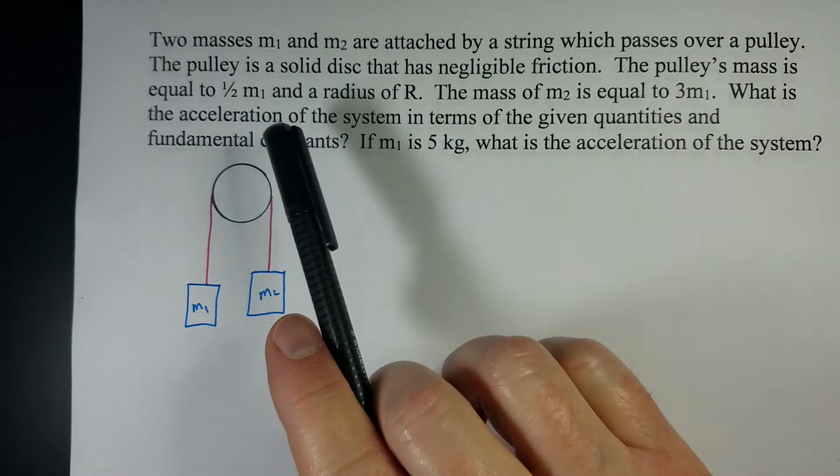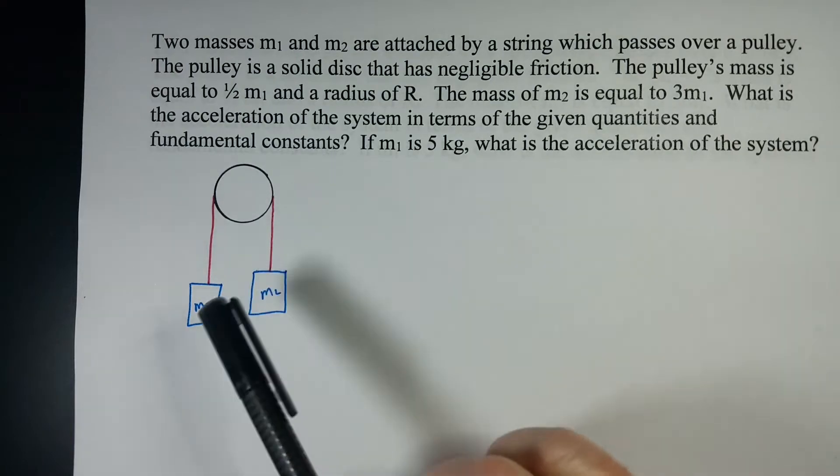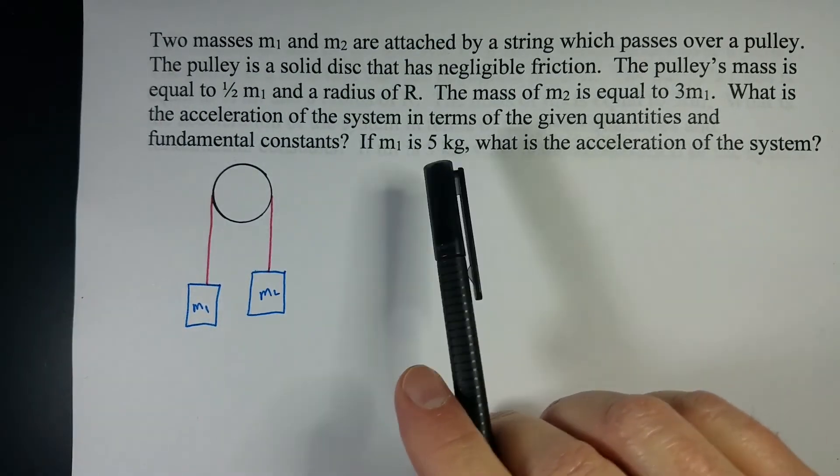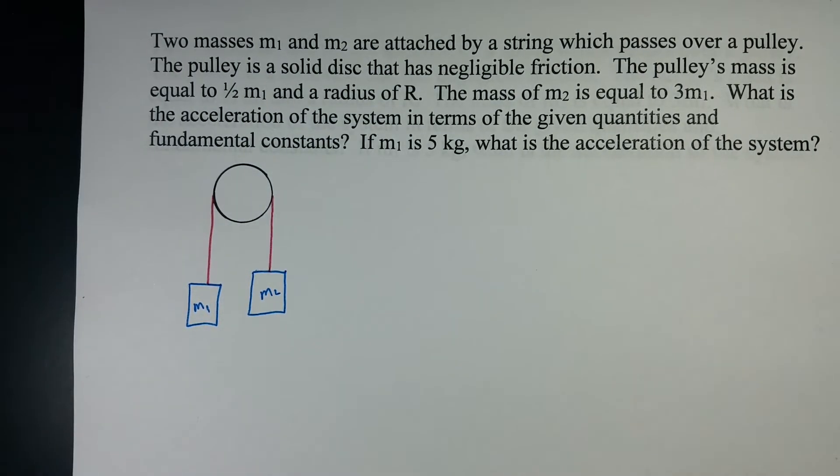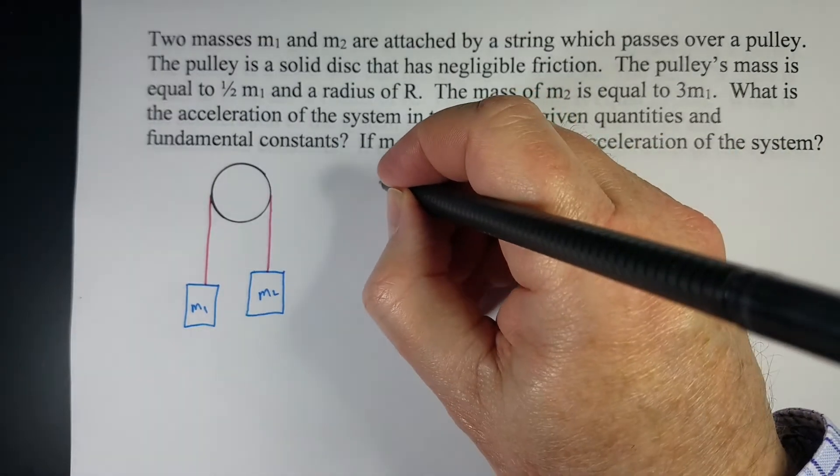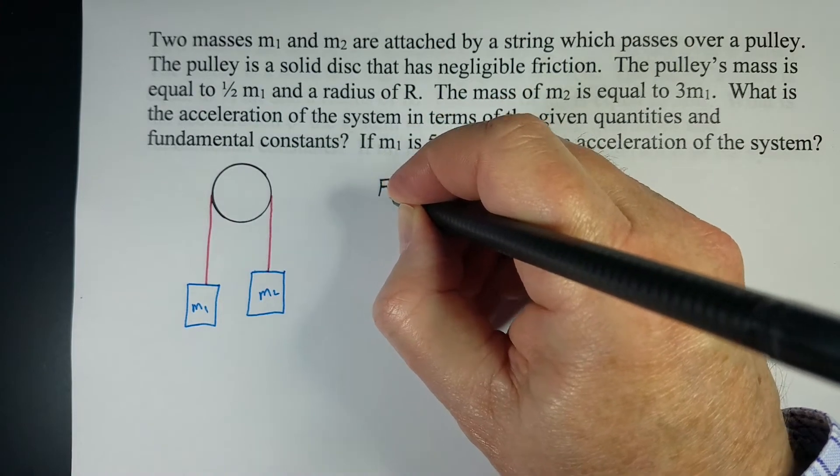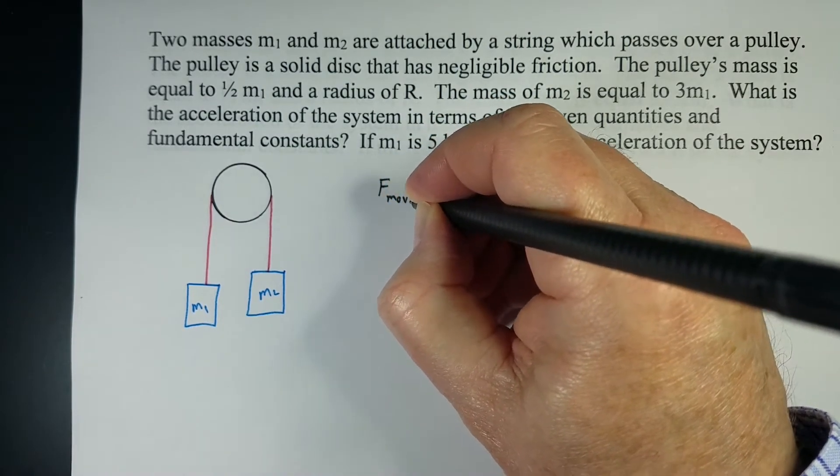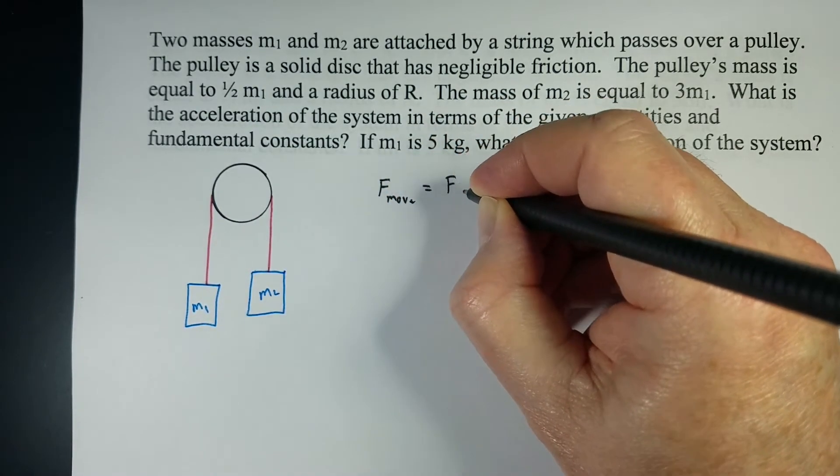We're going to figure out the acceleration of the system, first algebraically, and then we'll throw in some numbers to see how that affects things. If I've got an Atwood machine, I usually start off like this.